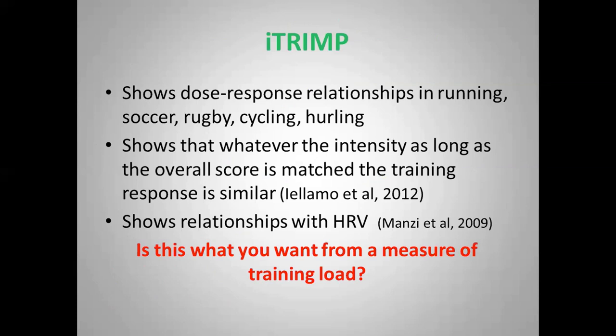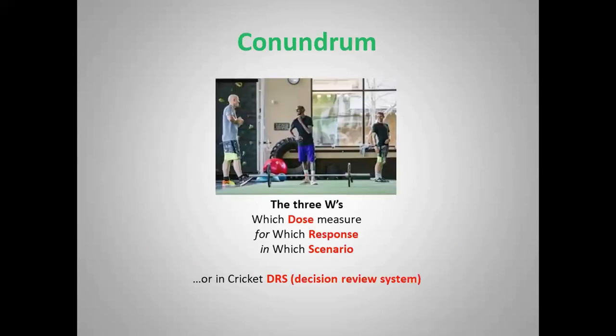To summarize on iTRIMP: we've shown it demonstrates dose-response relationships in running, soccer, cycling, rugby, and hurling, and we've compared it to other methods that don't necessarily show these relationships. There is a paper by Lamo in clinical situations that compared continuous versus intermittent protocols, showing that whatever the intensity of work, as long as the TRIMP score is matched the training response is also similar. There's also work from Manzi and colleagues showing those relationships with iTRIMP and heart rate variability.